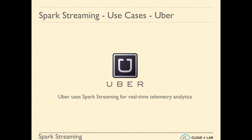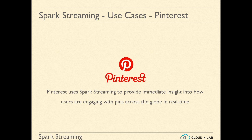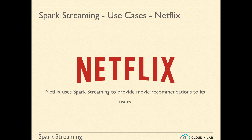Uber uses Spark Streaming for real-time telemetry analytics by collecting data from its mobile users. Pinterest uses Spark Streaming to provide immediate insights into how users are engaging with pins across the globe in real-time. Netflix uses Spark Streaming to provide movie recommendations to its users.